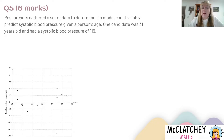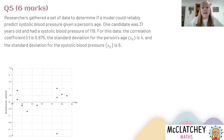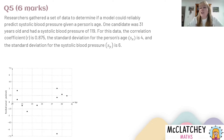One candidate was 31 years old and had a systolic blood pressure of 119. For this data, Pearson's correlation coefficient is 0.875. Looking at that, we can see we've got positive correlation and also very strong correlation. That might be important. The standard deviation of the person's age is 4 and the standard deviation for the systolic blood pressure is 6, so we've got an SX and an SY. We might be using this information to work out the values of A and B — to come up with an equation.